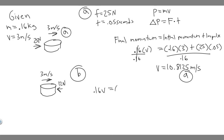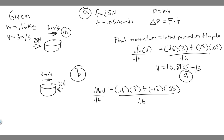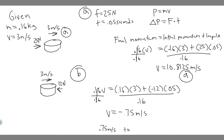For Part B, the calculation becomes: (0.16 × 3 + (−12) × 0.05) ÷ 0.16, which gives minus 0.75 meters per second. The negative sign tells us the direction: the final velocity is 0.75 meters per second to the left. So Part A gives approximately 10.81 meters per second to the right, and Part B gives 0.75 meters per second to the left. Hopefully you found this useful.